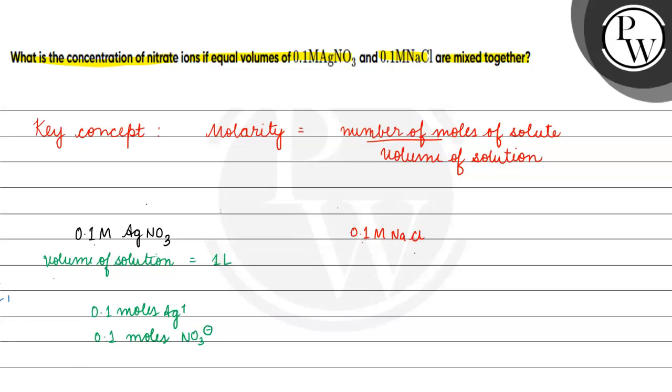In this case, the volume of AgNO3 solution and NaCl solution will be the same. That will basically give us 0.1 mol of NO3- and 0.1 mol of Cl-.